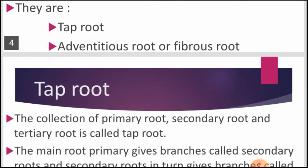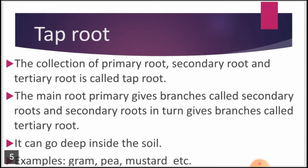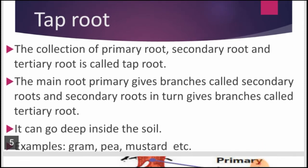In a tap root system, there is a main root called the primary root, which gives branches called secondary roots. Secondary roots again give branches called tertiary roots. This collection of primary, secondary, and tertiary roots is called the tap root system. Examples include gram, pea, and mustard. Due to the many branches, this root can grow very deep into the soil.